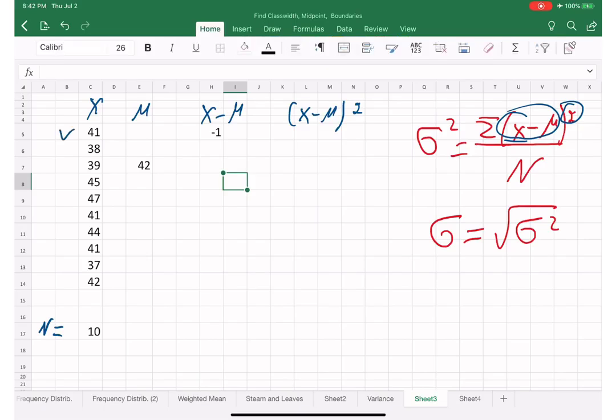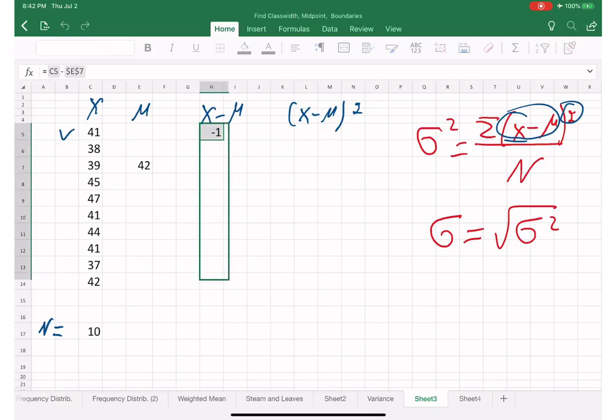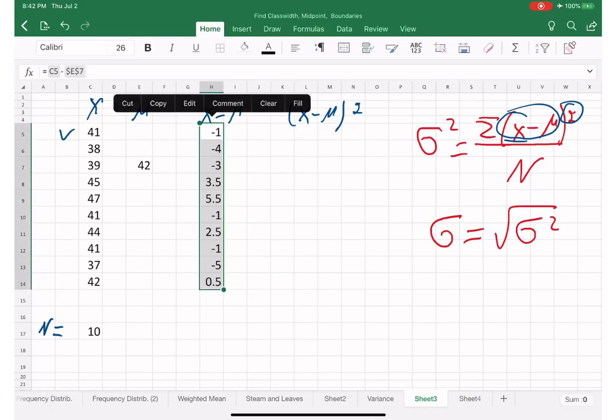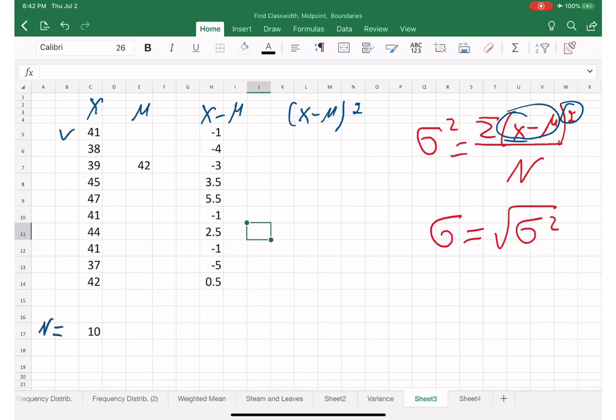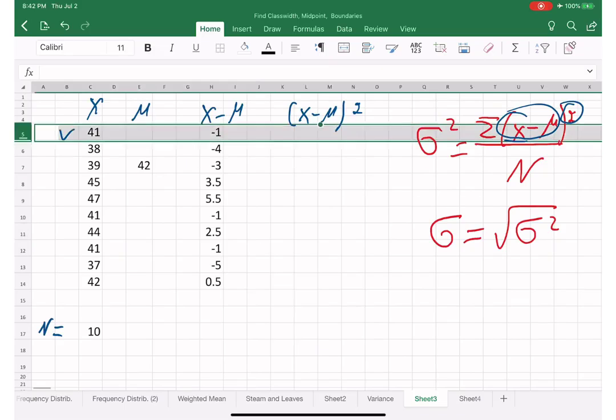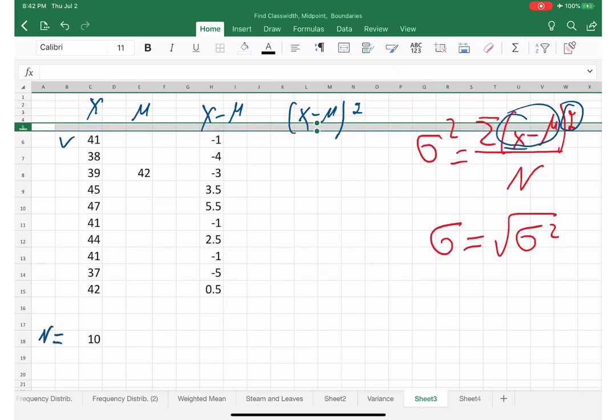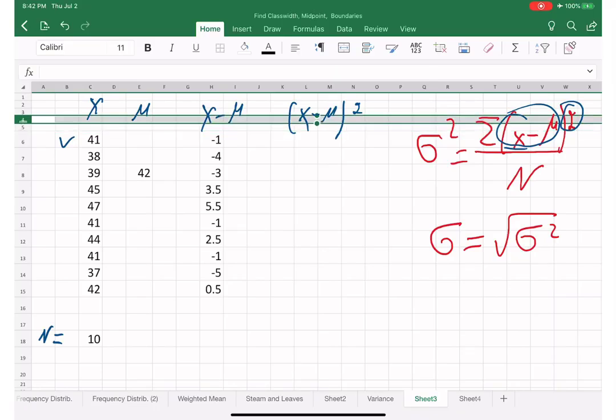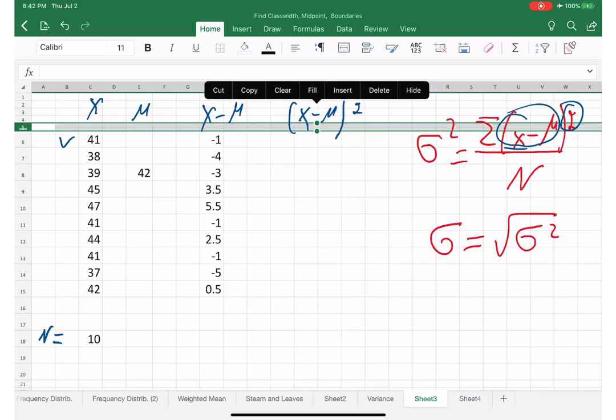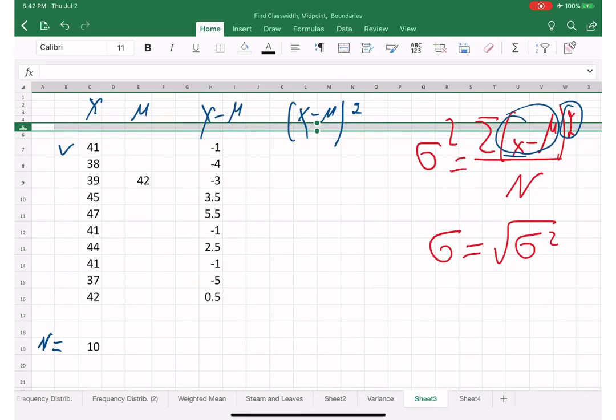Now I'm going to drag this down, fill it in. We have this. Next step. Let me see, I need to insert some space, one more, so it would separate.